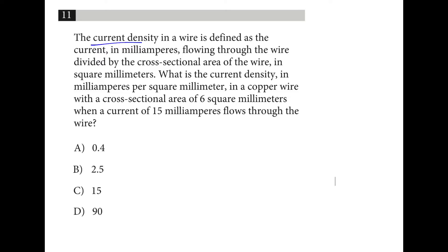Current density is the current divided by area. So current density is equal to current divided by area. They tell us that for the area we can use this, and the current we can use that. So the density is equal to 15 over 6. Two and a half.